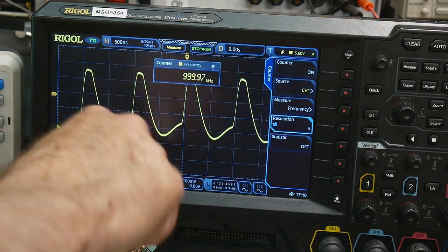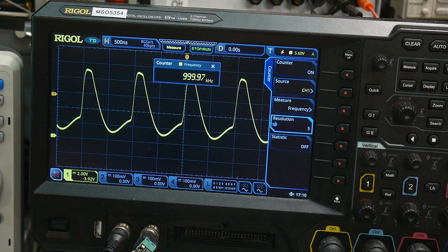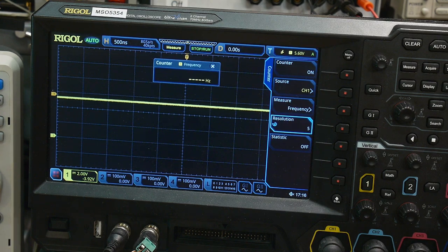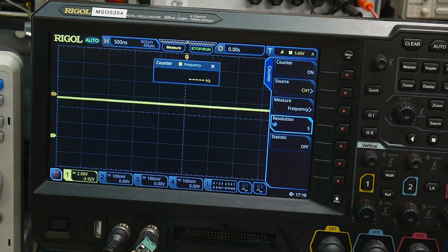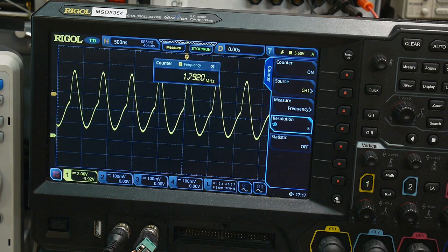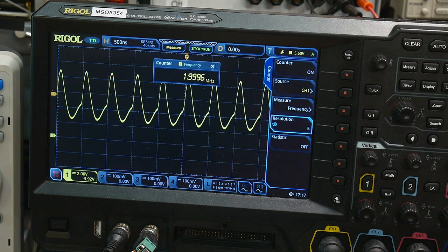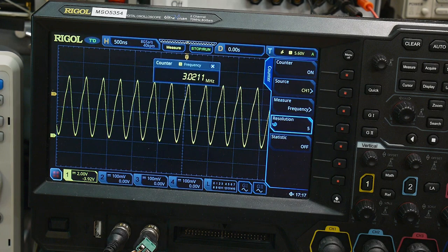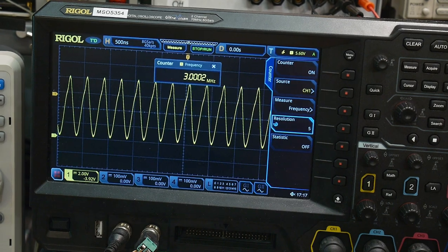There you go again, we have this fast rise time and then the droopiness. Let's pop in some other crystals while we're here. This is a 1.792 megahertz crystal - perfect, 1.792. This is a 2 megahertz crystal - very nice, 9996. And a 3 megahertz crystal - 3.0002, very nice.